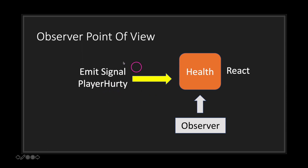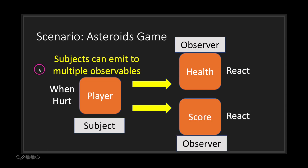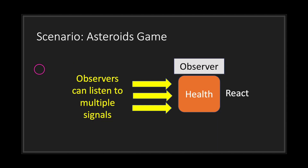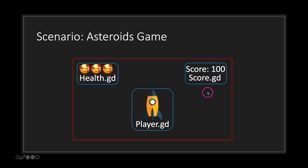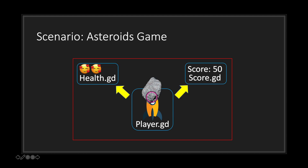When the observer receives a signal, it reacts. A subject can emit to multiple observers, and observers can listen to multiple signals — subjects can have multiple observers, and observers can have multiple subjects. Let's add a score object to the board. We now have a player, a health script, and a score script, each responsible for a single thing. When the player gets hurt, we emit signals to any classes that depend on knowing about it.